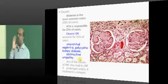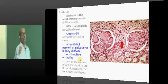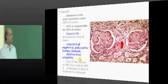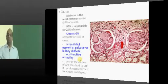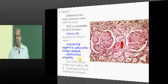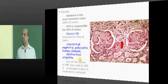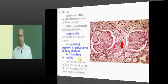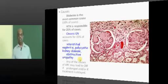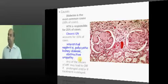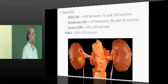Second, hypertension accounts for one-fourth of the causes of chronic kidney disease. Then chronic glomerulonephritis, lupus nephritis, or any other chronic glomerulonephritis accounts for 15% of causes. Then interstitial nephritis, polycystic kidney disease, and obstructive uropathy are the other remaining causes that lead to development of chronic kidney disease.